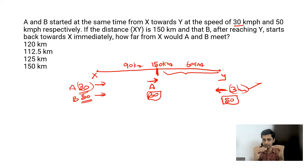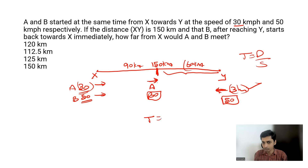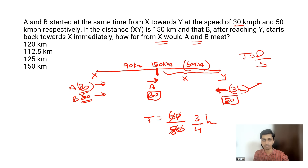When two people move in opposite directions, we add their speeds to get relative speed: 30+50 = 80 km/h. They need to cover 60 km together, so time = 60/80 = 3/4 hours. In 3/4 hours, A covers 3/4 × 30 = 22.5 km. A had already covered 90 km, so total distance from X is 90 + 22.5 = 112.5 km.